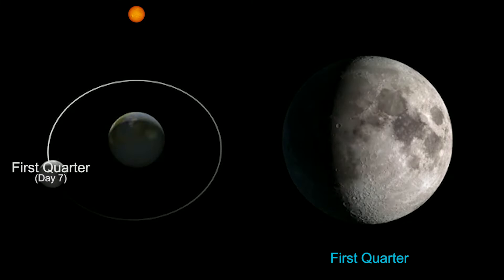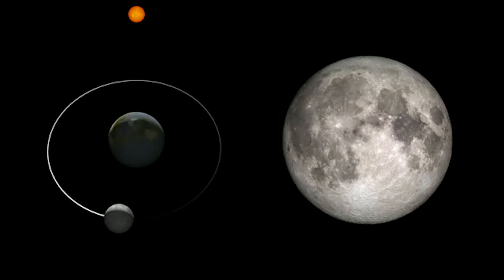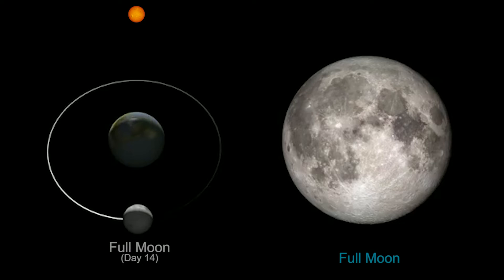Seven days after First Quarter, the Sun, Earth and Moon are once again in alignment. From the night side of Earth, the entire face of the Moon is illuminated by the Sun's light. This is known as the Full Moon.